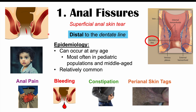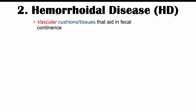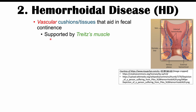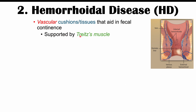The second condition that could cause perianal skin tags is hemorrhoidal disease. Hemorrhoids are vascular cushions or tissues that aid in fecal continence — hemorrhoids themselves are normal, but it's when they cause disease that we have a problem. Hemorrhoids are supported by the tritesus muscle. Looking at the dentate line, anything proximal or above it is internal hemorrhoids, and anything distal or below it is external hemorrhoids.